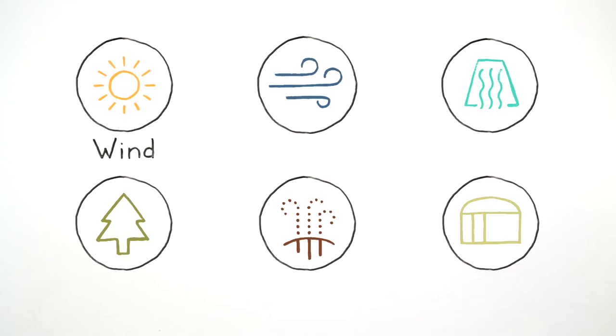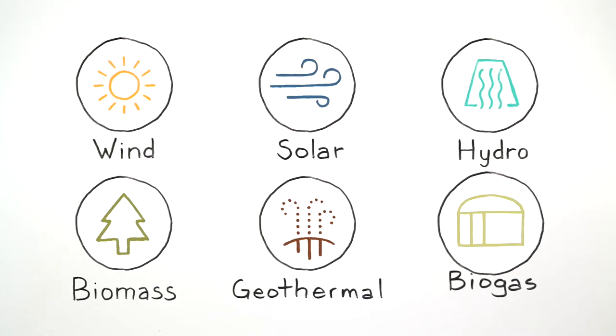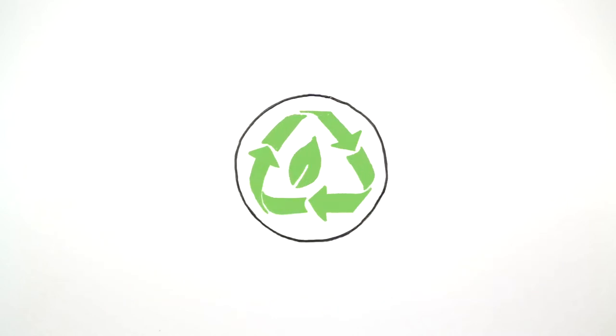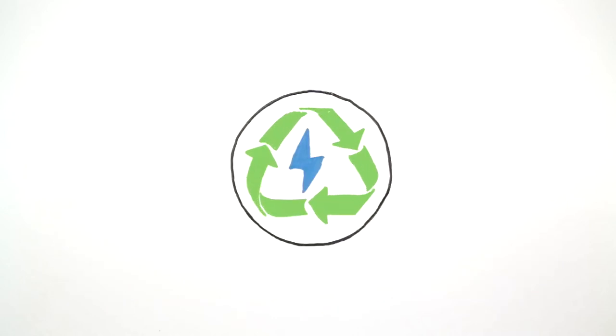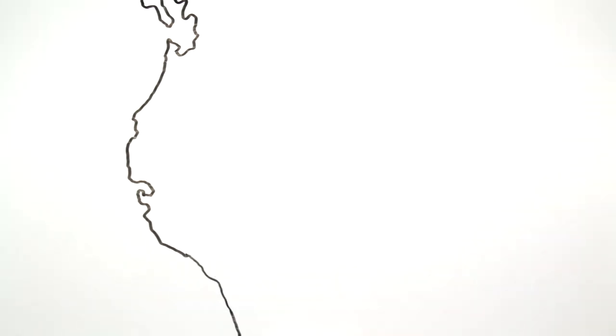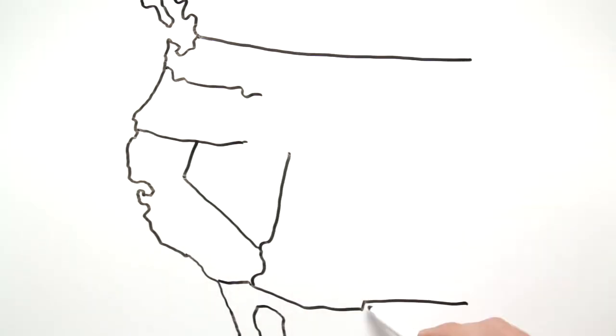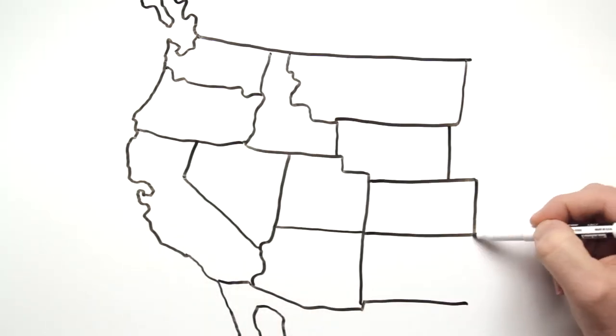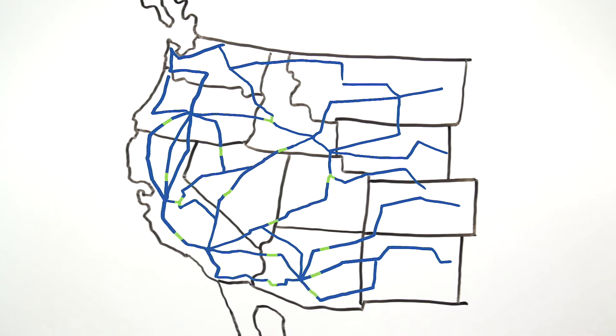But our goal is to find solutions that leverage renewable resource capabilities to create a cleaner, more reliable grid. Studies have shown that expanding the ISO's full day-ahead market services outside of California would provide more flexibility to move power, including renewable energy, to consumers throughout the West at a lower cost.